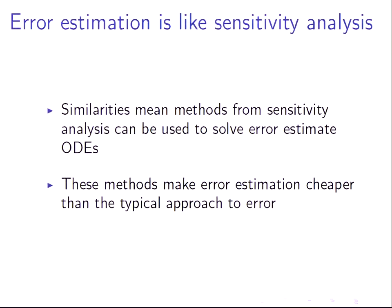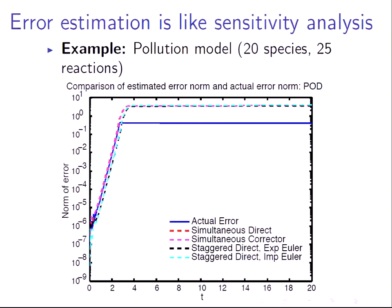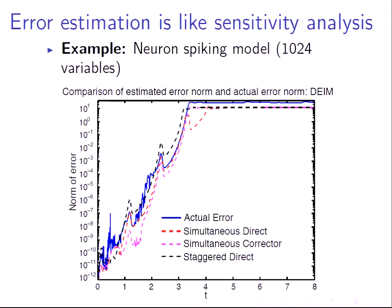As my first example, I take a pollution model from the literature. There was some previous work on error estimation; I developed new methods to estimate the error. The actual error in blue is tracked very well by the estimates, within an order of magnitude at worst, and often quantitatively. In a less well-behaved example — a discretized PDE also from the literature, and notice it's not chemistry, so this is application-agnostic — even though the PDE solution is oscillatory and jumps up and down, the error estimates still do a pretty good job. Instead of being within an order of magnitude at worst, it's within four orders of magnitude, but generally within one to two orders of magnitude.